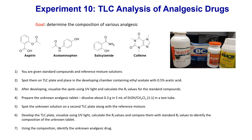For example, if the unknown contains acetaminophen, its spot will line up with the reference mixture and have a similar Rf value to acetaminophen. You can then compare this with the drug label on the bottle — for example, Tylenol lists acetaminophen, or Excedrin. Using the composition of the spots, you can identify what type of analgesic drug was given to you.